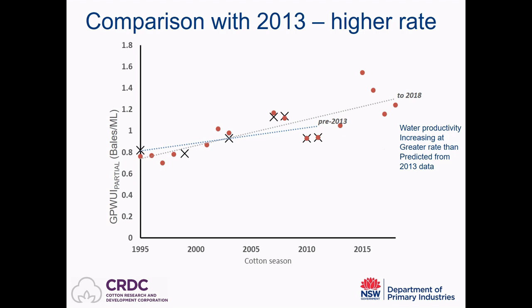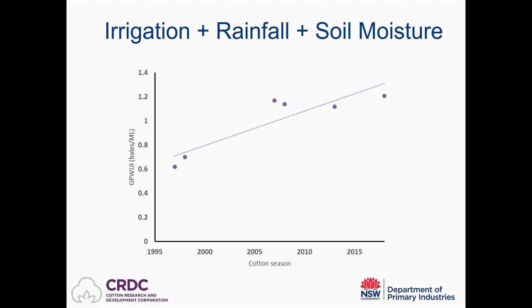That faster rate is partly because there was a lull in water productivity for a couple of years following a period of recovery. And finally, when we look at the full water profile, we see the same trend as we did for the partial GPW, which is what we would expect — again, a strong, steady, statistically significant improvement in water productivity over the last decade.